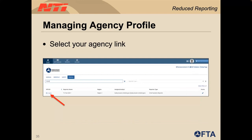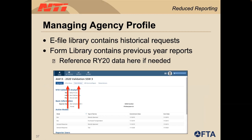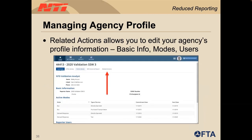The agency profile section houses data that typically doesn't change from year to year, such as your basic information, the modes you operate, the users, and you can find historical reports and the previous year's report to help you with reporting. You can access the profile by clicking on the home tab at the top of the page and then selecting profile. You will see a link to your agency's NTD ID number, which takes you to your profile. This page contains your analyst name, phone number, email address, as well as your agency's basic information. Two frequently used tabs are the e-file tab and the form library tab. The e-file library contains historical requests like extension requests or agency fiscal year updates. The form library contains your agency's reports from previous years.